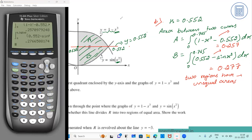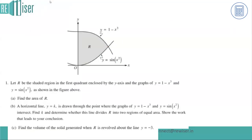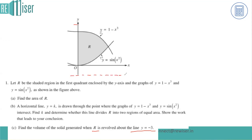For Part C, we need to find the volume of the solid generated when R is revolved about the line y = negative 3. That line would look something like this — let's say this is the line y = negative 3.